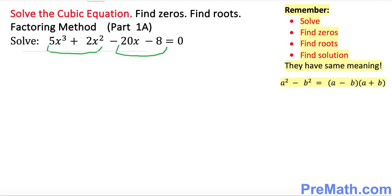Now look at the very first pair. What do you see in common? What could be factored out? As you can see, x squared could be easily factored out. Once you bring x squared outside, what's going to be inside the parentheses? It's going to be 5x plus 2.